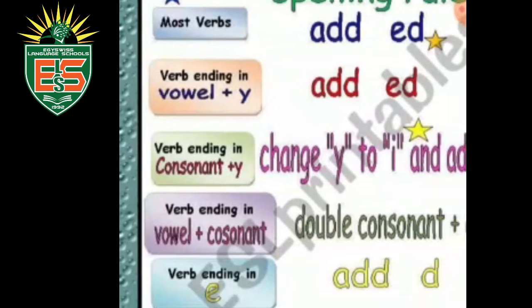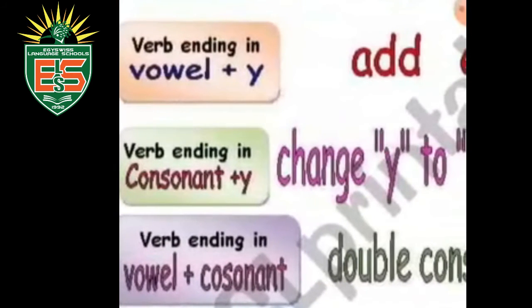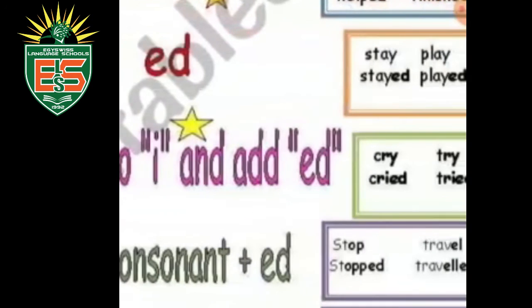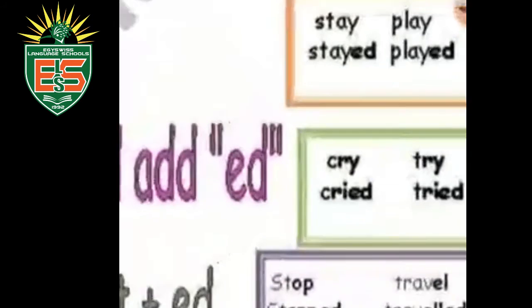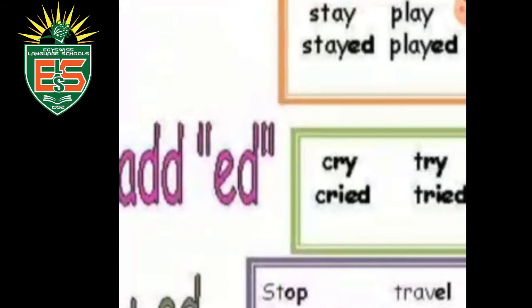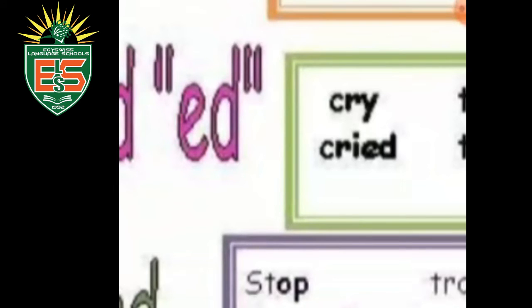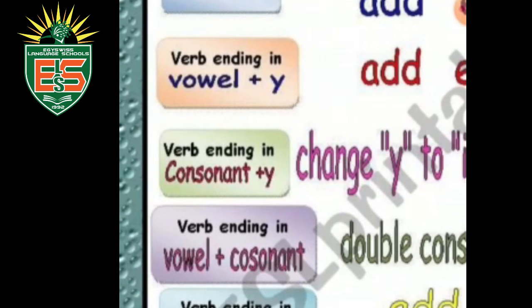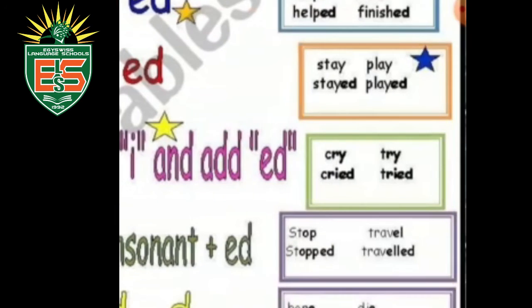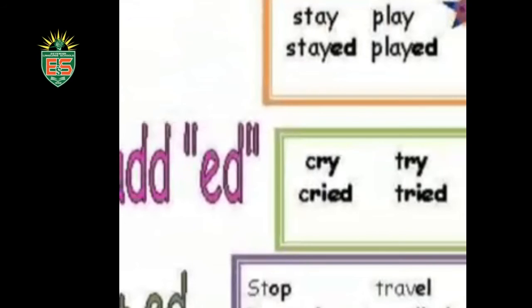Rule three: verbs ending in consonant plus -y, change -y to -ied. For example: 'cry' → 'cried', 'try' → 'tried'. Rule four: verbs ending in vowel-consonant, double the consonant and add -ed. For example: 'stop' has vowel 'o' and consonant 'p', so double the p: 'stopped'. 'Travel' → 'travelled'. Final rule: verbs ending in -e, just add -d. For example: 'hope' → 'hoped', 'die' → 'died'.